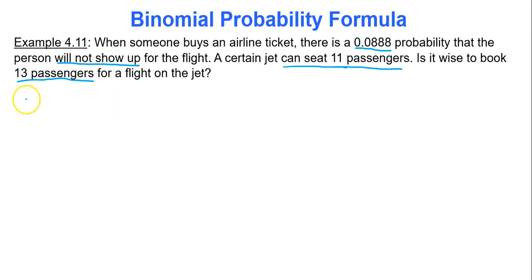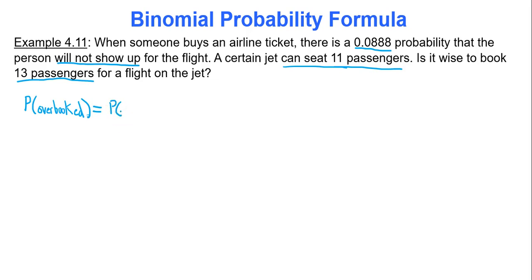What we're going to calculate is the probability of there not being enough room, or that the flight is overbooked, meaning more people show up than what we have seats. So that would be the probability that if you only have room for 11 passengers, that means the probability that 12 or 13 show up. Let's find the probability that the flight gets overbooked, meaning 12 or 13 people show up.